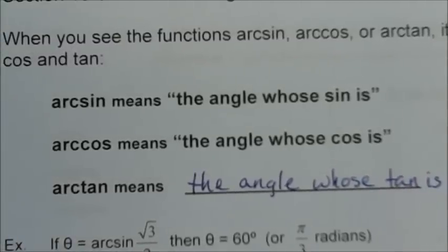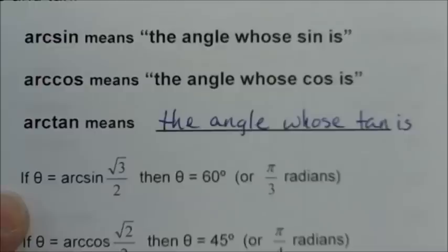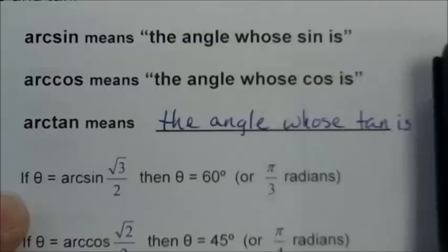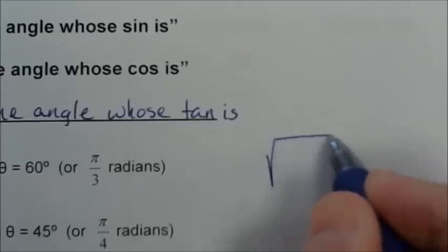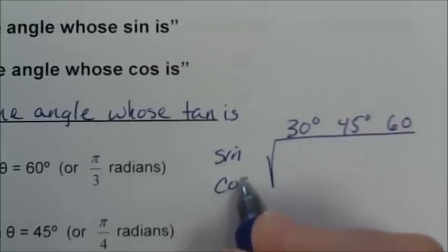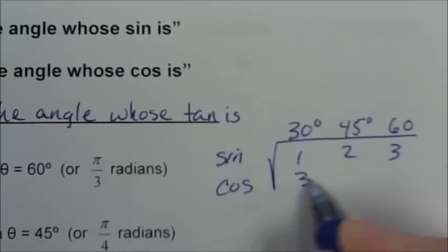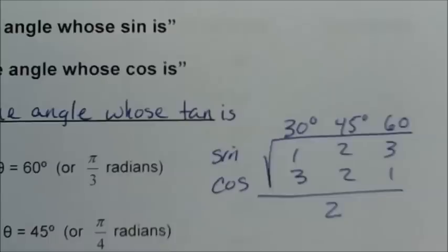So we're looking for an angle here. If theta equals arc sine of square root of 3 over 2, what angle measure does theta have? Let's look at our trick table — 30 degrees, 45, 60 for sine and cosine, divided by 2. What angle has a sine value of square root of 3 over 2? Square root of 3 over 2 — that's an angle of 60 degrees, or pi over 3 radians.